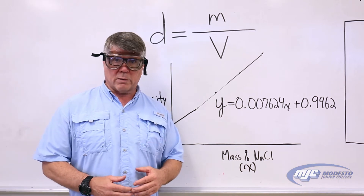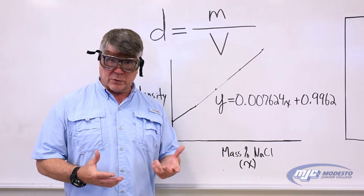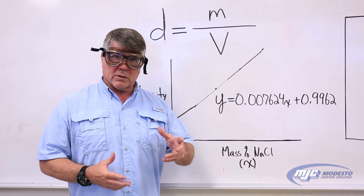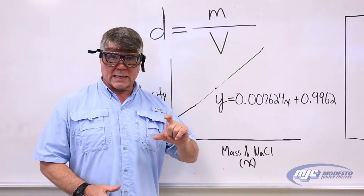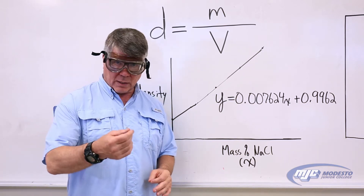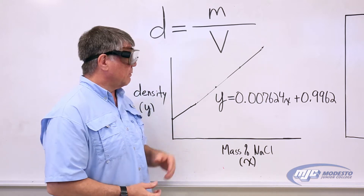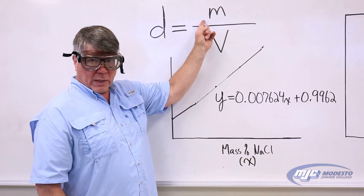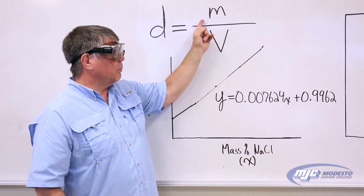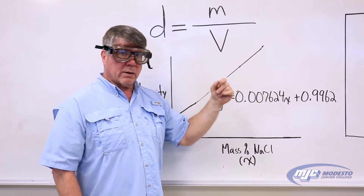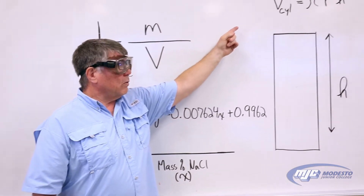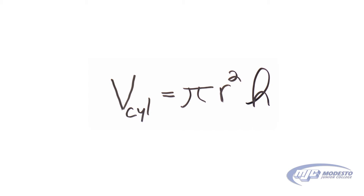In the first part of this experiment, we're going to figure out the density of a metal cylinder. Because it is a geometric object — a shape that we can calculate the volume of by taking a couple of measurements — it's pretty easy to get the density. To get the volume, we're going to calculate it using the formula given in the lab report: the volume of a cylinder equals pi times r squared times h, where r is the radius and h is the height or length.